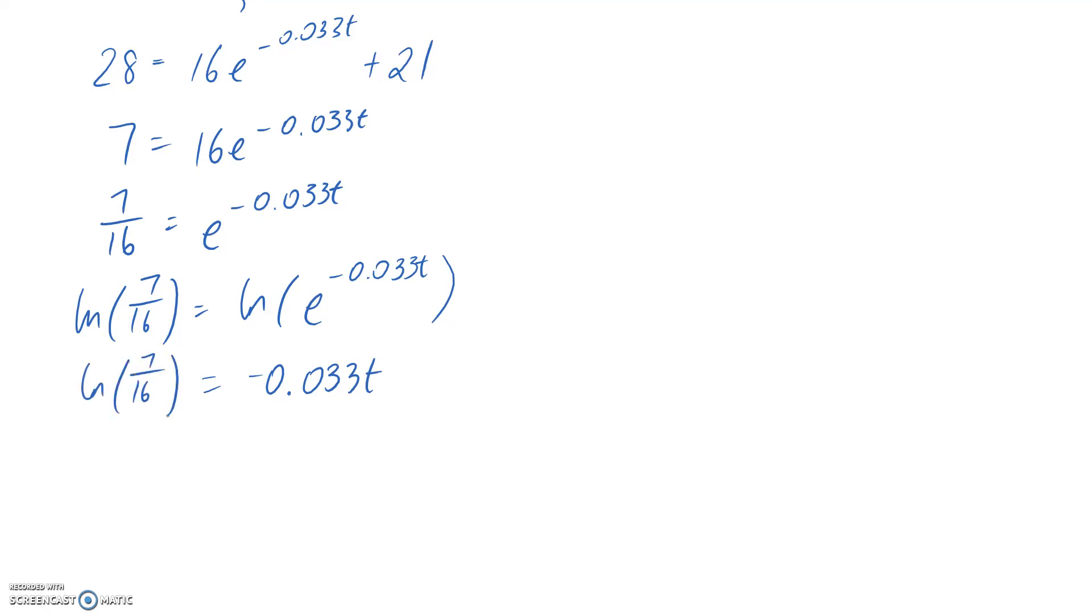And my final step is just to rearrange for t on its own. So if I divide by that small negative number, negative 0.033, I find out that t is approximately equal to 25.1, and the units are going to be minutes since that's what we were working in above.